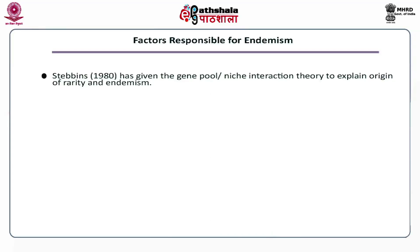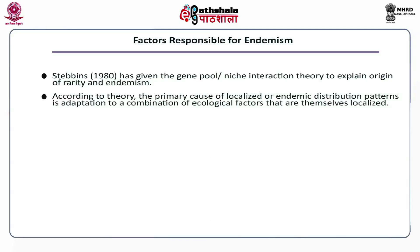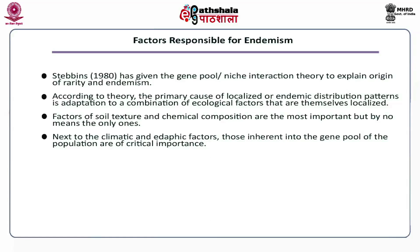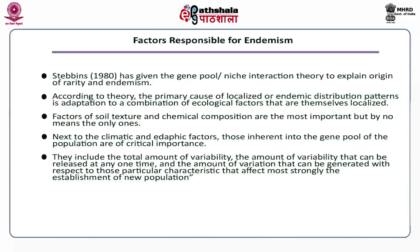Stebbins in 1980 gave the gene pool or niche interaction theory to explain the origin of rarity and endemism. According to this theory, the primary cause of localized or endemic distribution patterns is adaptation to a combination of ecological factors that are themselves localized. Factors of soil texture and chemical composition are the most important, but by no means the only ones. Next to climate and edaphic factors, those inherent in the gene pool of the population are of critical importance — including the total amount of variability, the amount of variability that can be released at any one time, and the amount of variation that can be generated with respect to characteristics that most strongly affect the establishment of new populations.